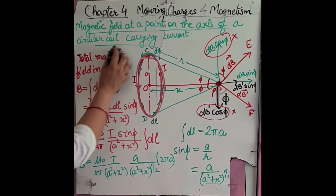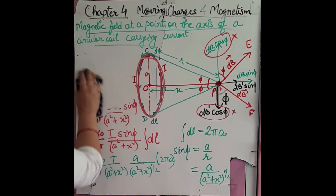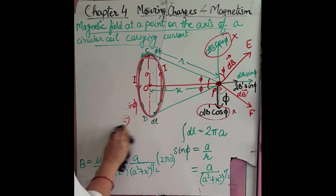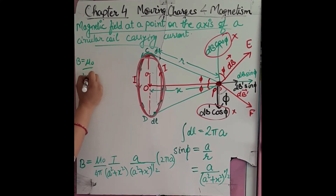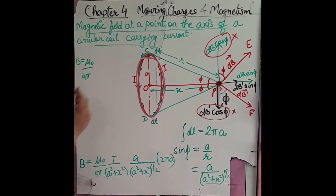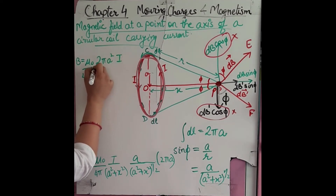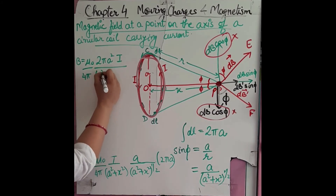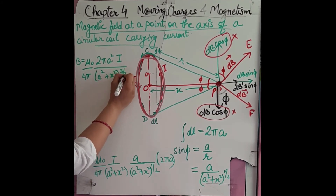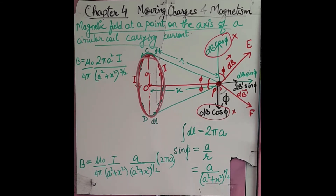Simplifying, B = (μ₀/4π) · (2πIA²) / (A² + X²)^(3/2). For N turns, the integration of dl becomes 2πNA, so the expression becomes B = (μ₀/4π) · (2πNIA²) / (A² + X²)^(3/2). The direction of this magnetic field is along the axis — along the x-axis from point P.